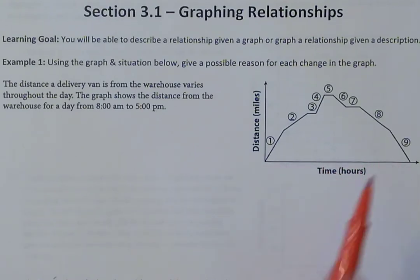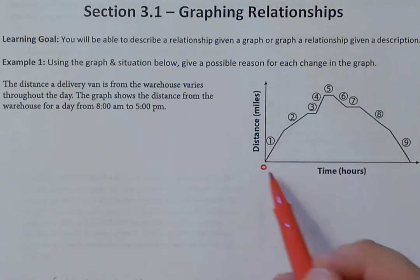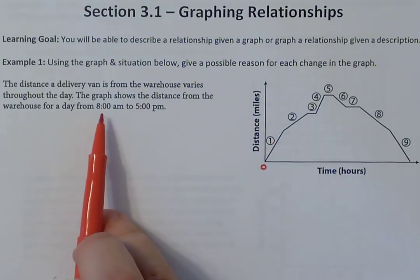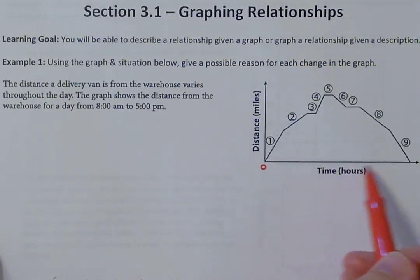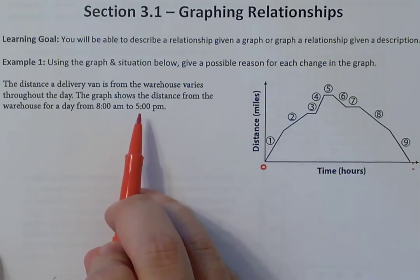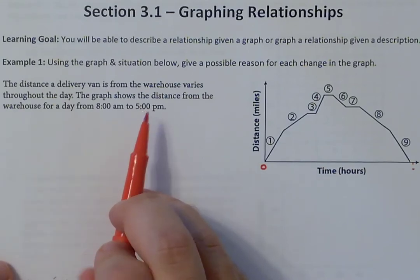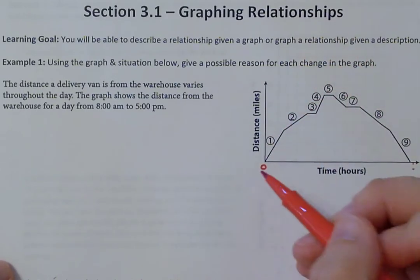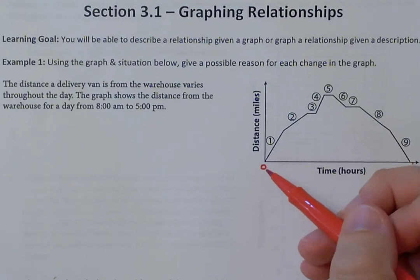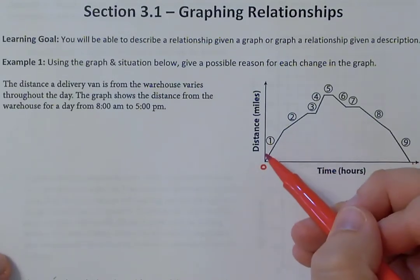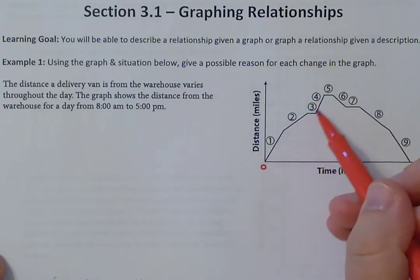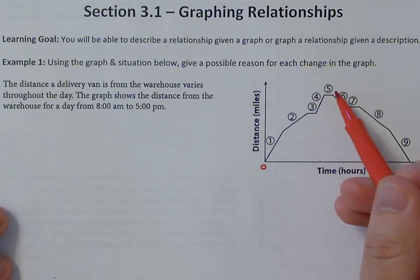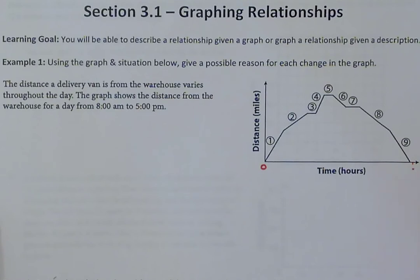So further right means more time has passed — starting at zero hours, or 8 o'clock, ending at 5 p.m. when the delivery van gets back to the warehouse. On the y-axis, the bottom is zero miles from the warehouse, meaning the van is at the warehouse. The higher the graph goes, the further away we are. As the line rises, the van gets further away; as it comes back down, it gets closer.